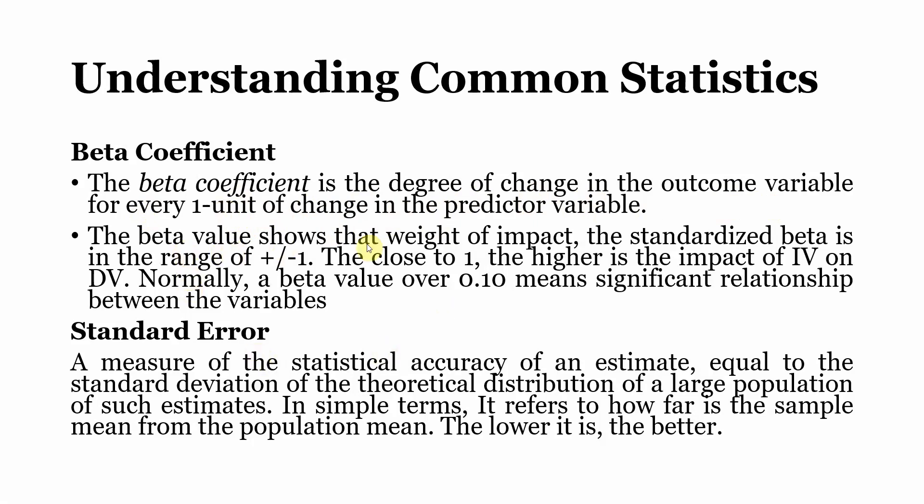Now the beta value shows the weight of impact. The standardized beta is in the range of plus to minus 1. The closer it is to 1, the higher is the impact of IV on DV. Normally, a beta value over 0.10 means significant relationship between the variables. But this is not always the case, and it is strongly recommended that you look into the t value and p value.